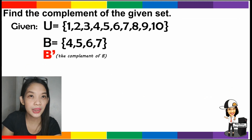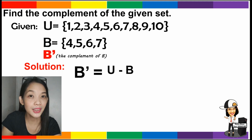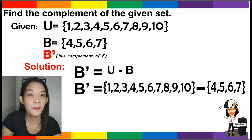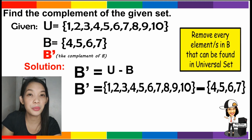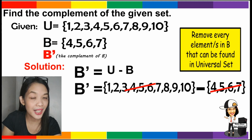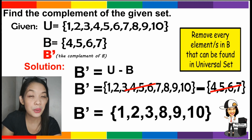To get the complement of B, universal set minus set B. We must list the elements 1 to 10 and subtract the elements of set B which are 4, 5, 6, and 7. We must remove every element in B that can be found in the universal set. The complement of B will be 1, 2, 3, 8, 9, and 10.